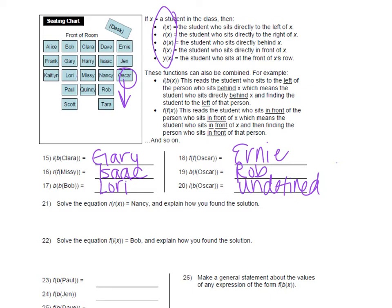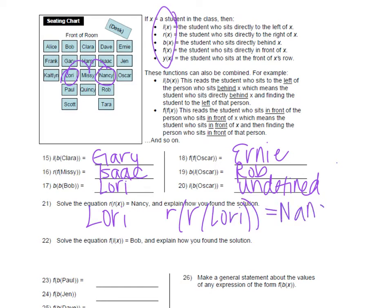Moving on to 21: solve the equation — right of right of x equals Nancy. So basically we're working backwards. We got to figure out who is the person we would be starting with. We know Nancy is to the right and to the right of this person, so you're basically going backwards and figuring out who is to the left, to the left of Nancy. Nancy is to the right and to the right of this person, so that would have to be Lori.